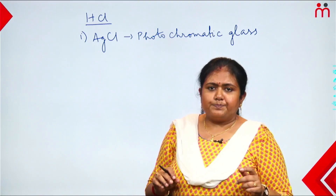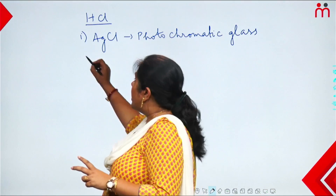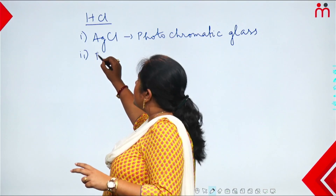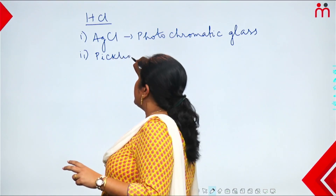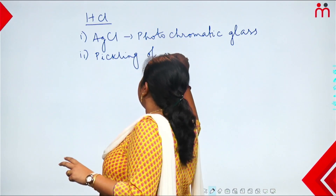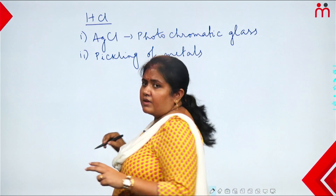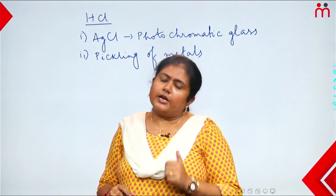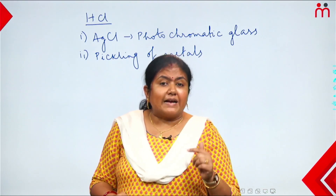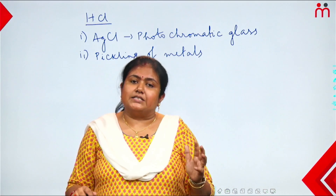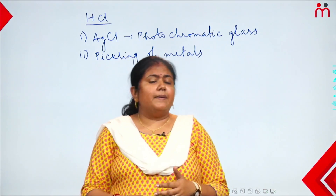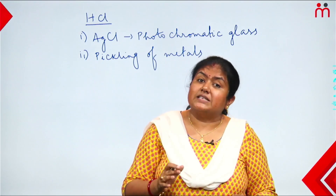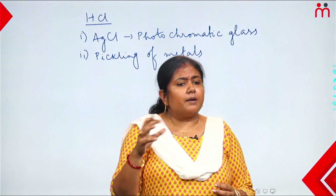Second use of hydrochloric acid: pickling of metals. What is pickling of metals? It is a process in which a layer of rust is removed from iron shapes. In this pickling process, hydrochloric acid is used because most acidity and pickling property belongs to hydrochloric acid, making it the best choice.